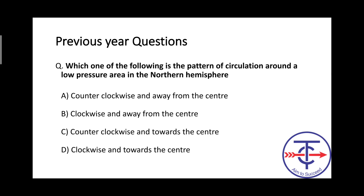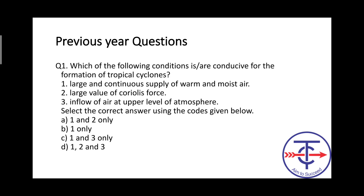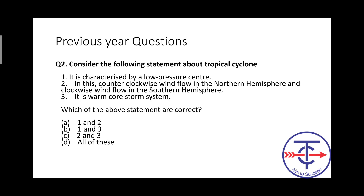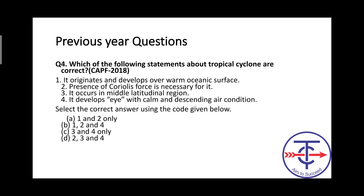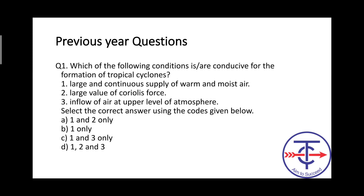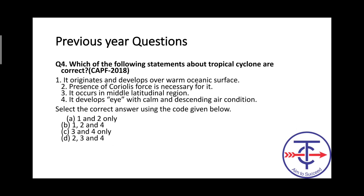A previous year question asked about the pattern of circulation around a low pressure area in the northern hemisphere — what direction it moves. Another question asked what conditions are required for a tropical cyclone to form. In CDS, a question asked which statement about tropical cyclone is correct. In CPF, the question about conditions for tropical cyclone has been asked at least 4 times repeatedly.